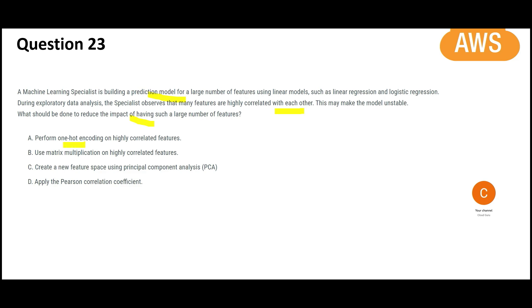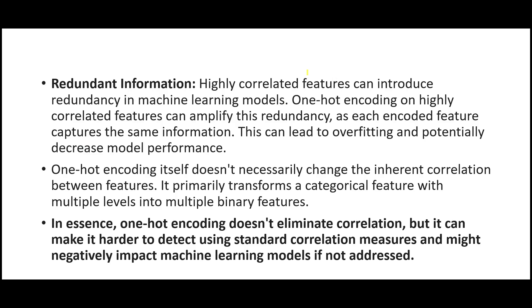Will you perform one hot encoding? As it is, you have highly correlated features. That means it will have a lot of redundancy. Plus, you are going to use one hot encoding. It will amplify the redundancy. It can lead to overfitting and decrease the model performance. Not good.